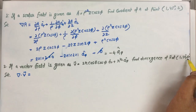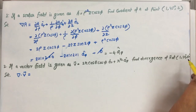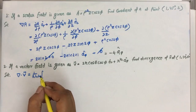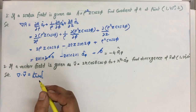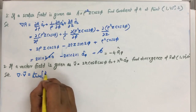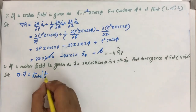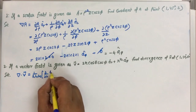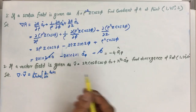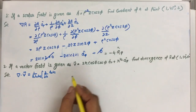So in that case, we try to find the general formula first. It is 1 over h1 h2 h3, which we have written already. On the basis of that, we will write the final equation. So 1 over h1 h2 h3, del over del R of h2 h3, and the component of V in the direction of R.